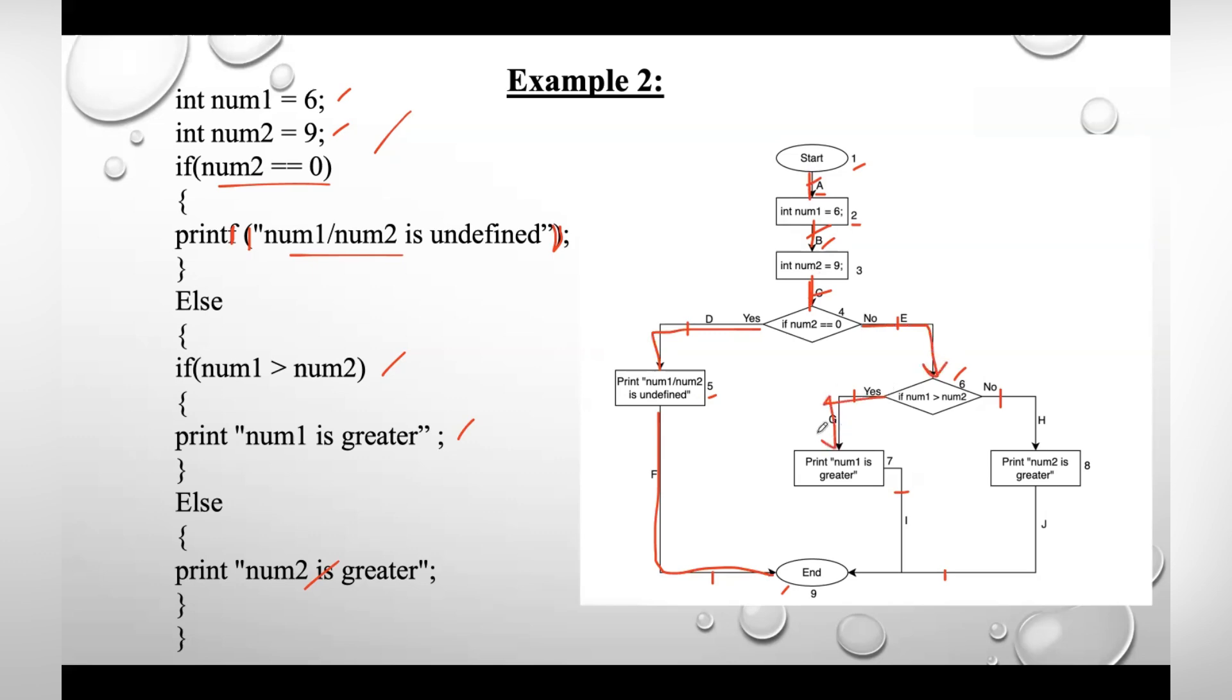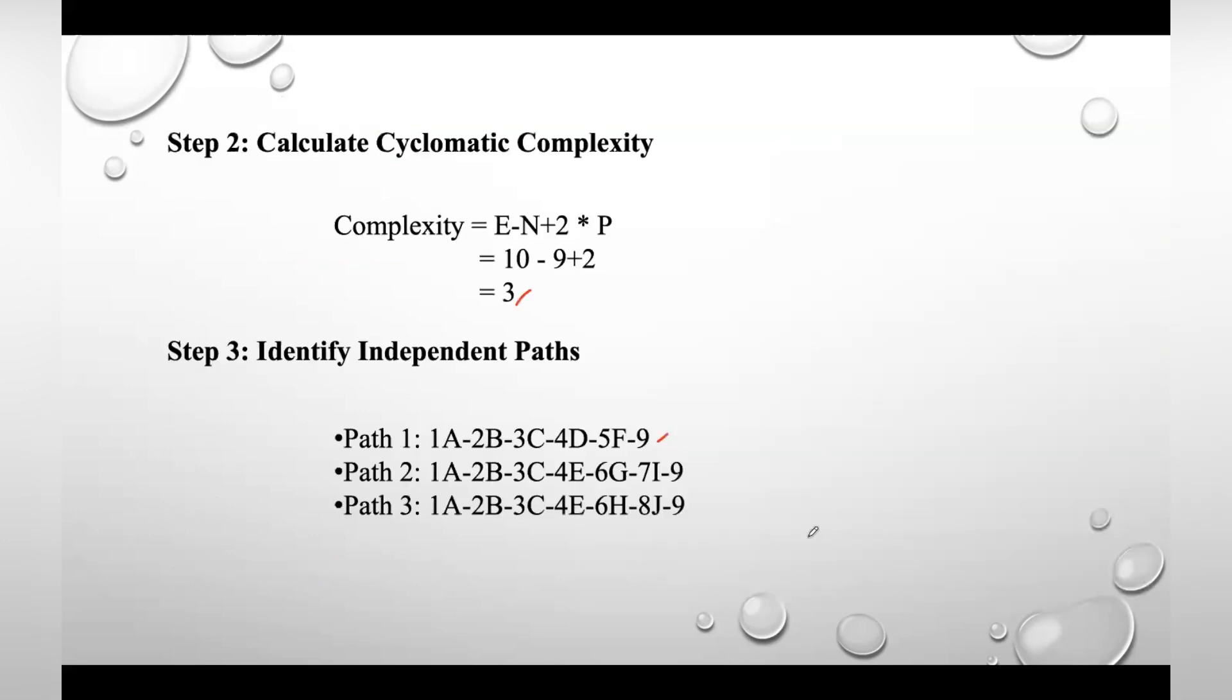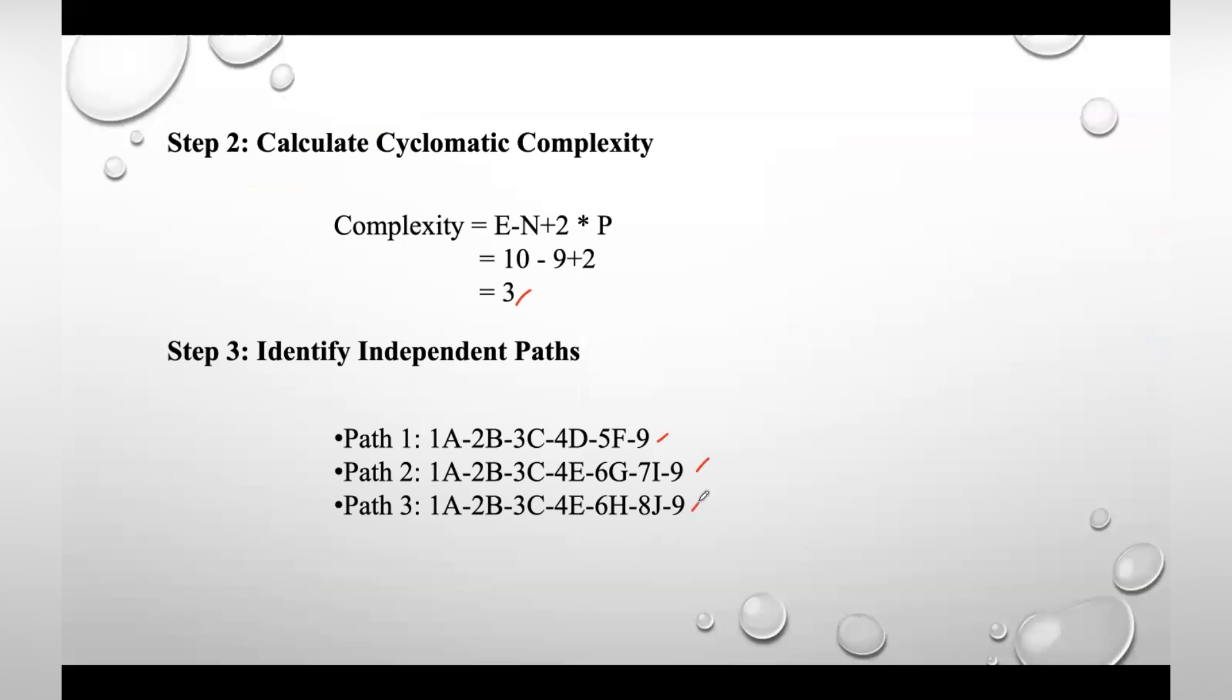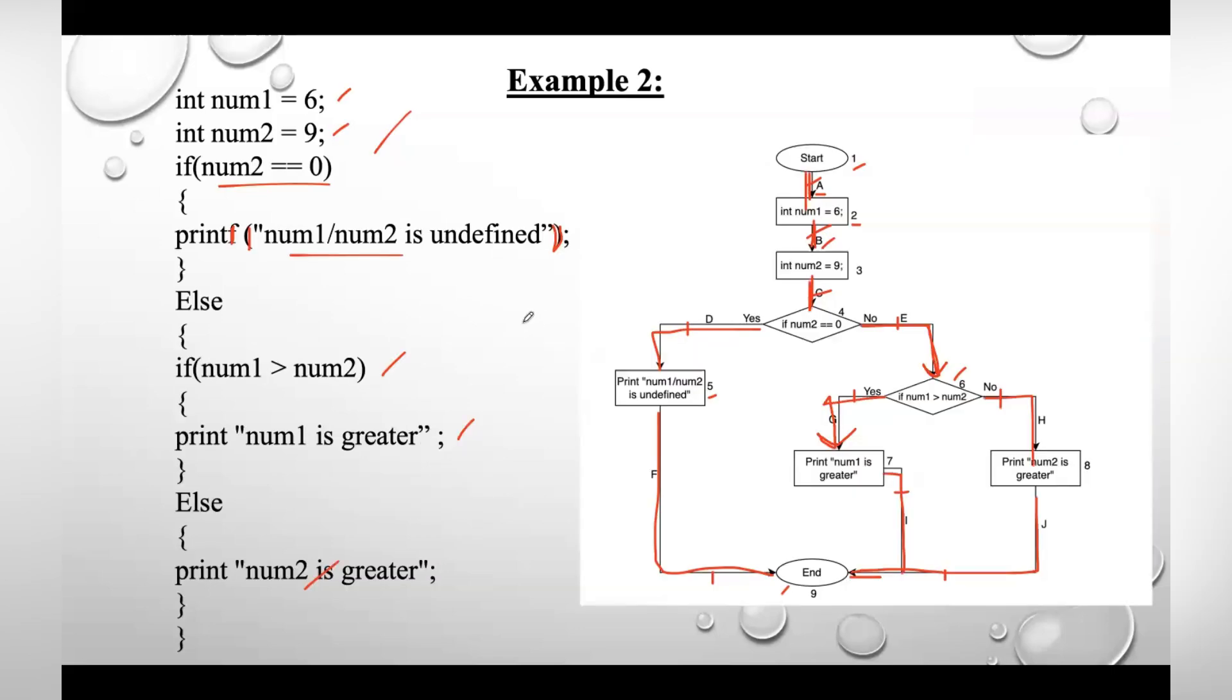Now second path is 1A-2B-3C-4E-6G-7I-9. That is the second path. Now what is the leftover path? This side, right. So 1A-2B-3C-4E-6H-8J-9. So we got all the three paths. Then we need to design three test cases based on the value 3 here. So what are the three test cases? We will take values for these numbers so we will evaluate all the three conditions.